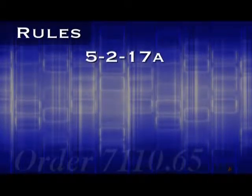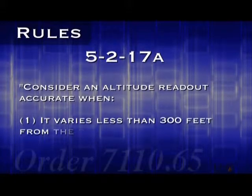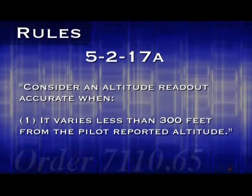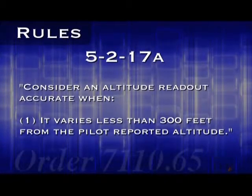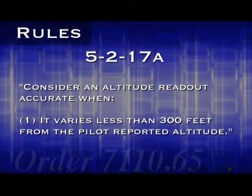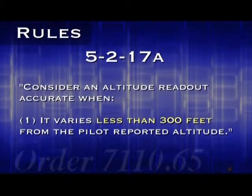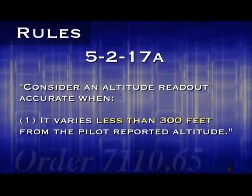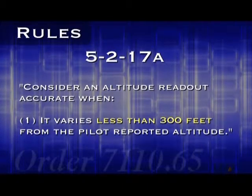How do you know if it's accurate? Chapter 5, Section 2, Paragraph 17a provides the answer: consider an altitude readout accurate when it varies less than 300 feet from the pilot reported altitude. It's very important to note that the mode C altitude must differ by less than 300 feet. If it varies by 299 feet it's valid, but if it varies by 300 or even 301 feet, it cannot be used.